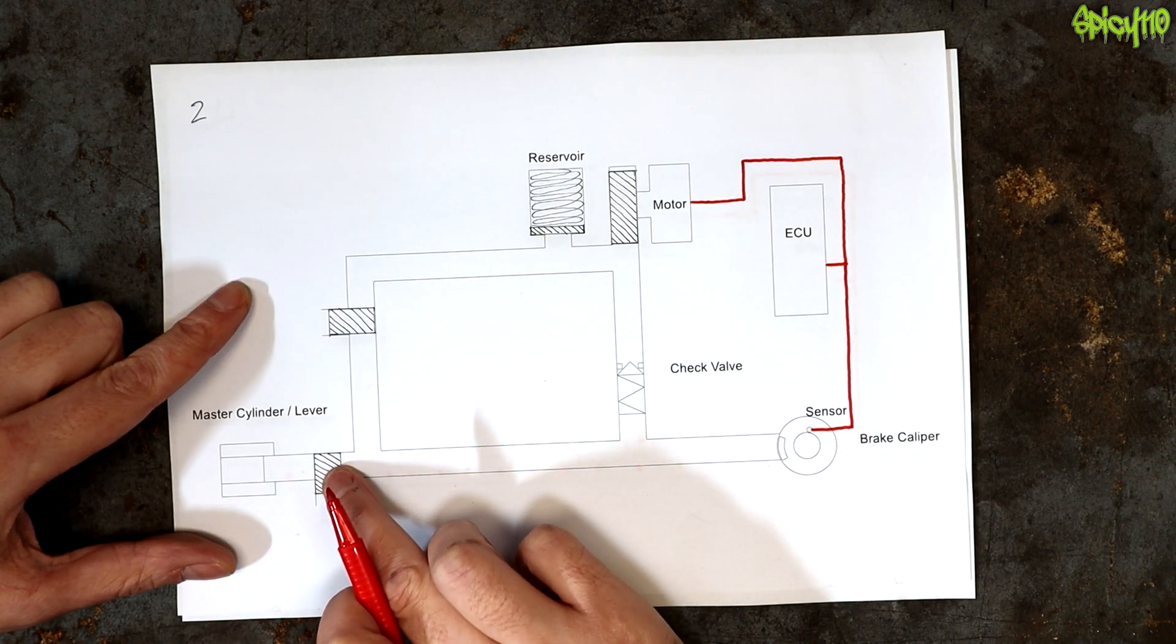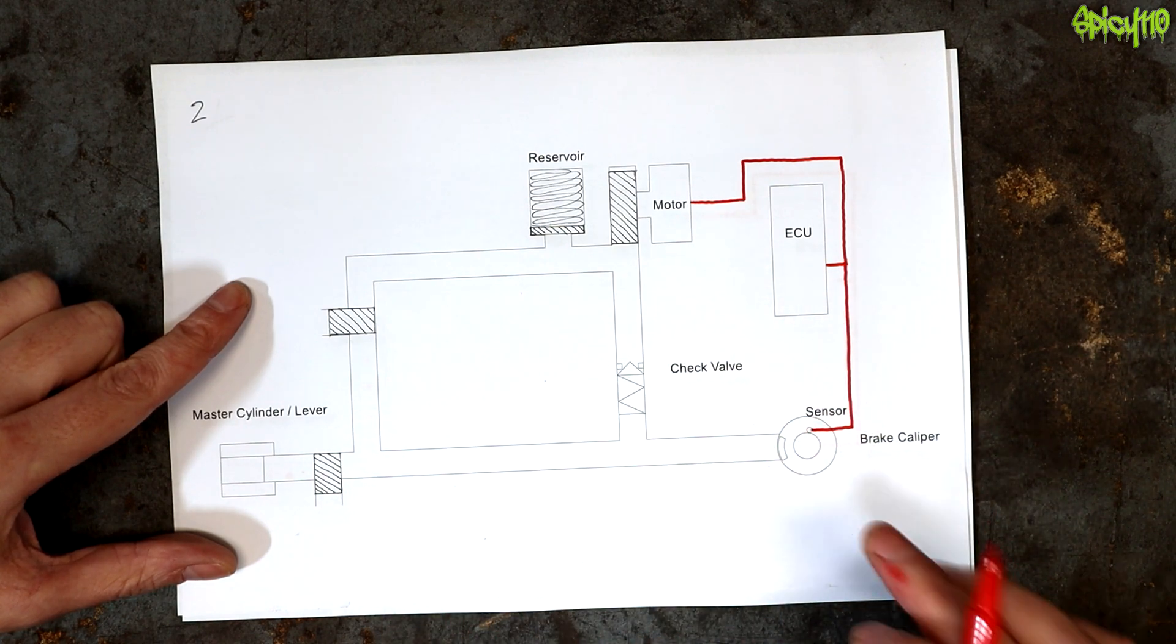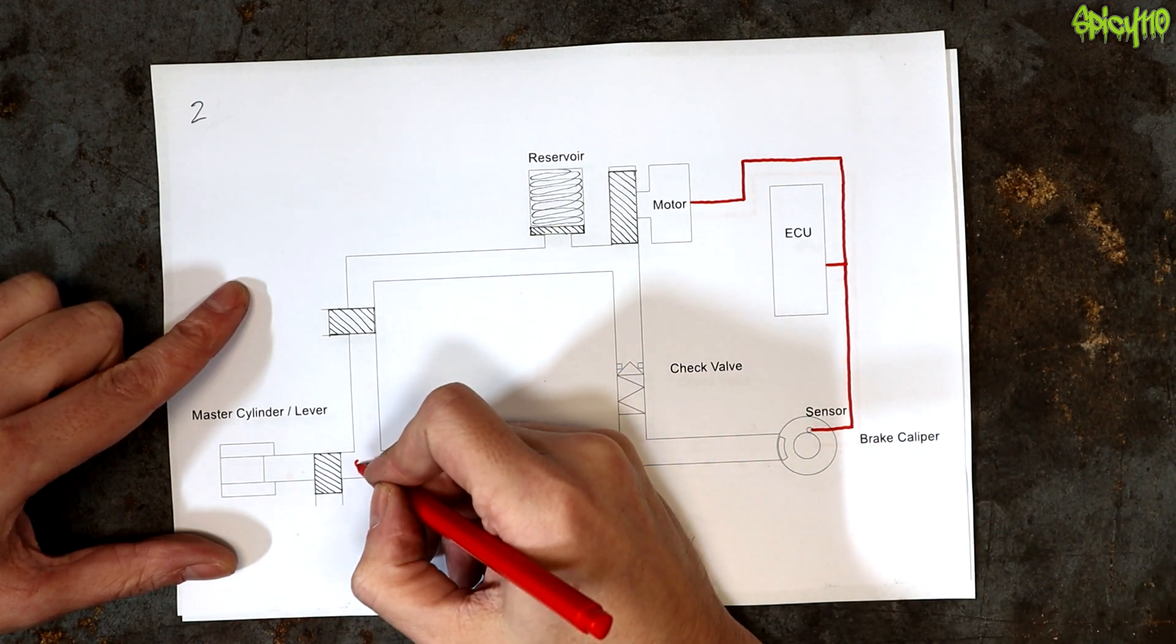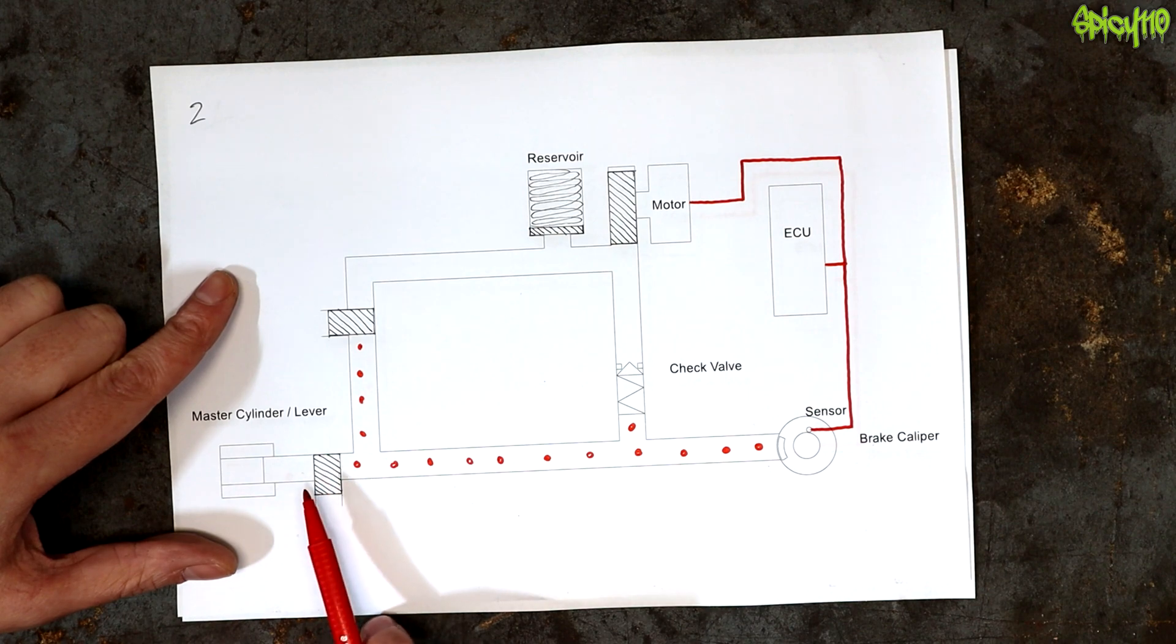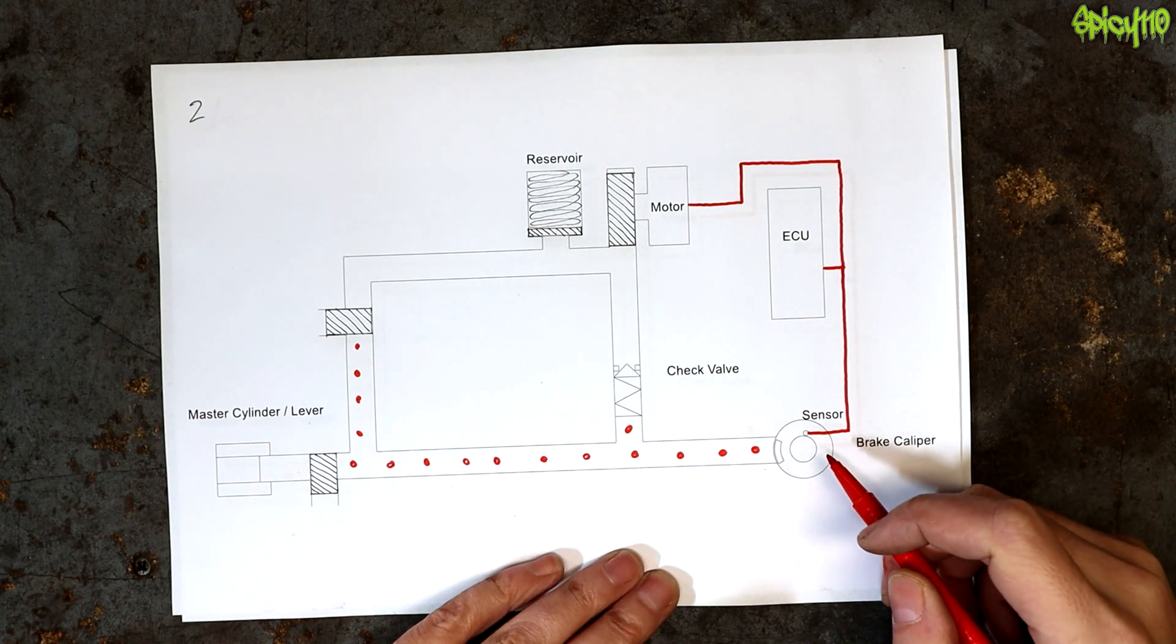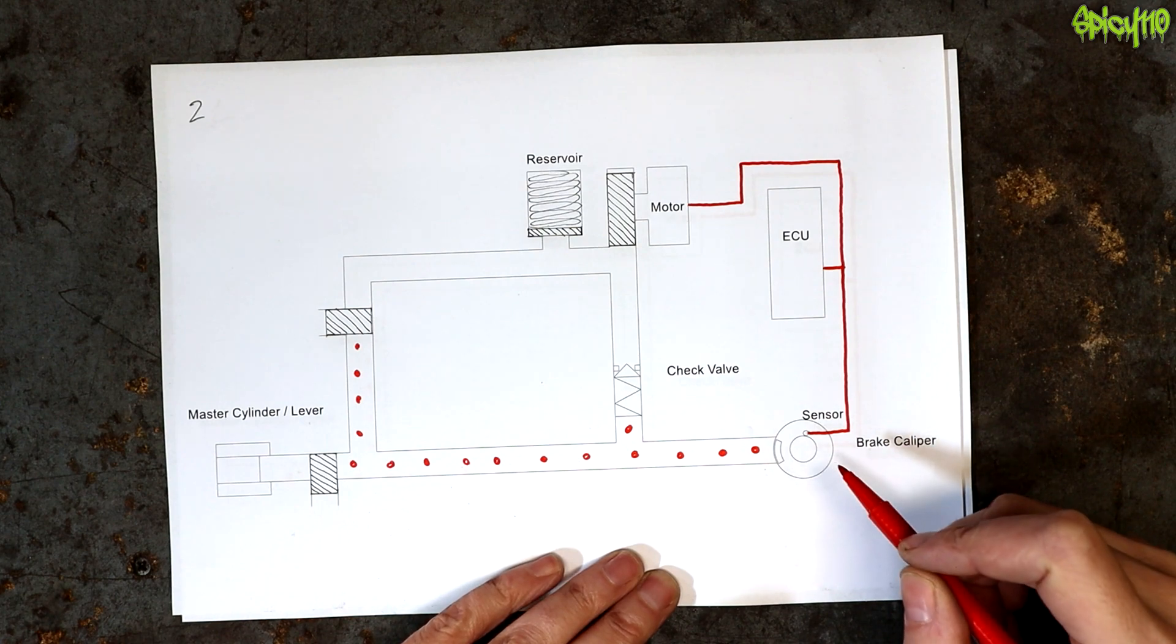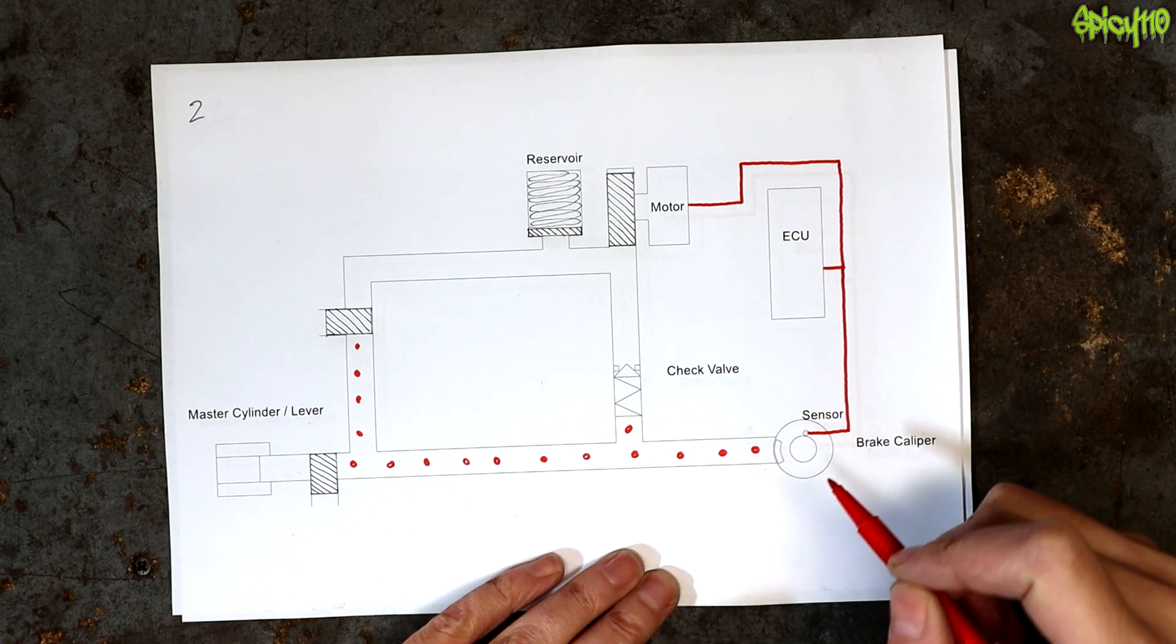So this isolation valve here is going to close and stop you adding any extra pressure to this system, but it has still got pressure in it. So it's blocked you adding any more pressure with your hand, and it's kept it at the level that you had it at. So the wheel sensor is then going to check about 10 times a second, is the wheel still locking or not? And if it is, then it's going to need to reduce the pressure on it even more.